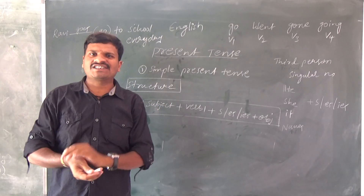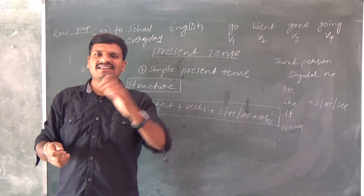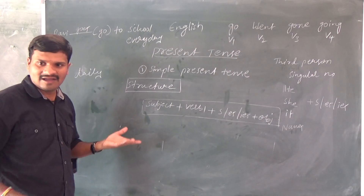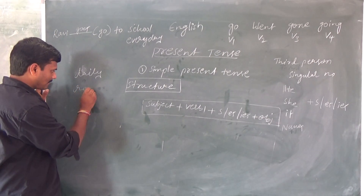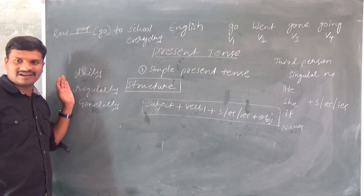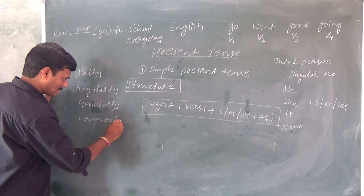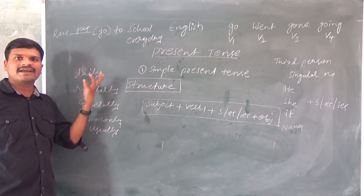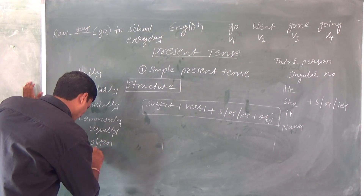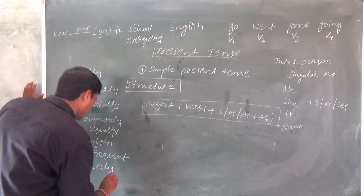I will now tell you the keywords. If you remember the keywords for each tense, it becomes very easy. The keywords for simple present tense are: daily, regularly, generally, commonly, usually, rarely, often, and frequently. These are the keywords. Why should we know the keywords? Because these keywords appear in the sentence to help us identify the tense.